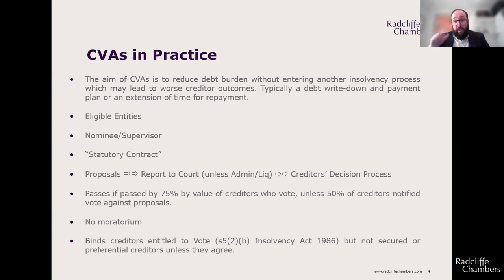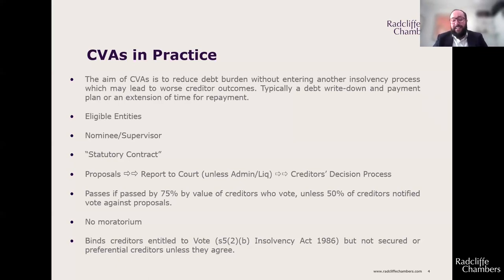The company must provide a statement of affairs to set out its financial position. If the nominee consents — which they will if they have been properly involved — they must submit a report to court saying the CVA has a reasonable prospect of being approved by creditors and of being implemented, and that it should be put to creditors for consideration, specifying a date, time, and place for the decision-making process. Critically, you cannot use the deemed consent procedure; you need a qualifying decision-making procedure under Rule 15.3.